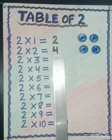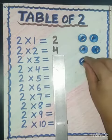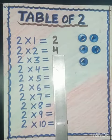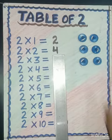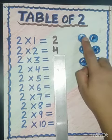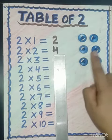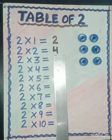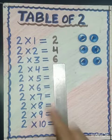Two threes are — again we will add two things. So let's count: one, two, three, four, five, six. So two threes are six.